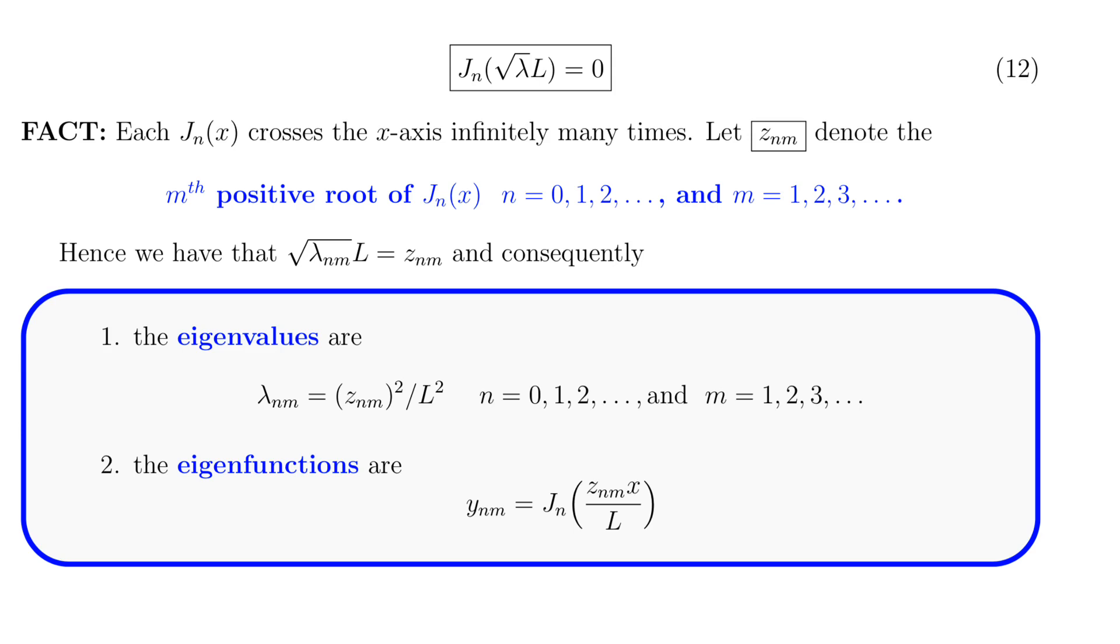Hence we have the square root of lambda nm times l equals z sub nm gives us the solution of equation 12, and we can solve this for the eigenvalues. The lambda nm's are given as the square of the zeros divided by l squared, and the eigenfunctions y sub nm are the Bessel function j sub n evaluated at z sub nm times x over l.